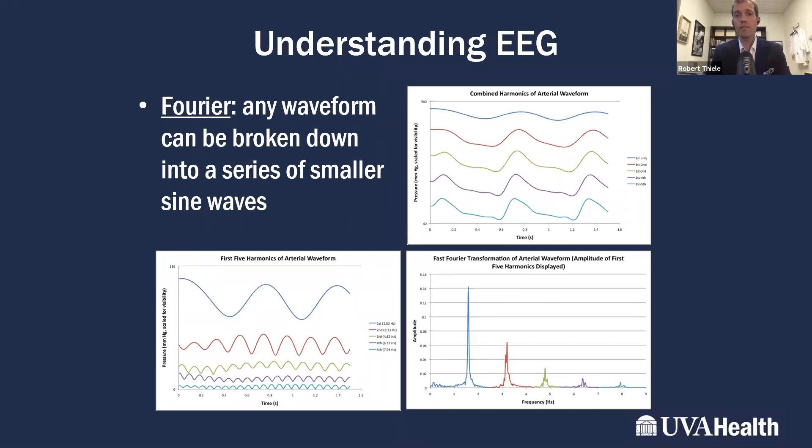Fourier's theorem basically says that any physiologic waveform can be reproduced by a series of sine waves. On that top right, what I have here is a blood pressure tracing from the femoral artery of a dog in an animal experiment. That light blue line is the actual blood pressure tracing. On the bottom left, what you see is different sine waves that, if you add them up together, will accurately reproduce the blood pressure tracing in the dog.